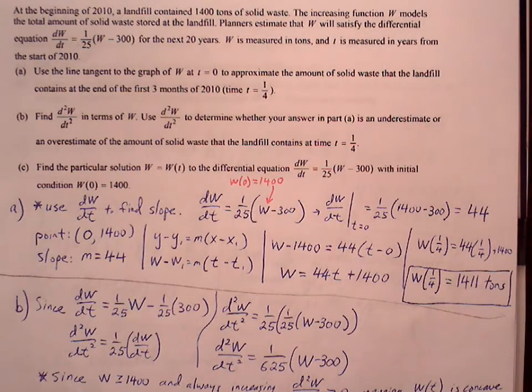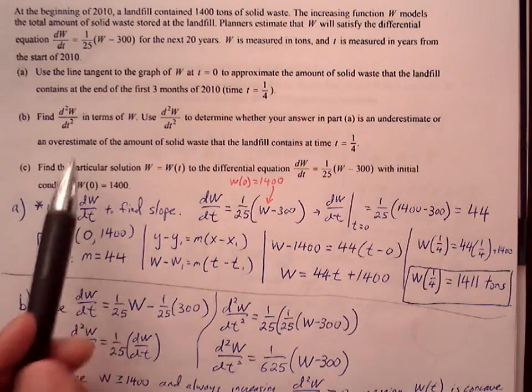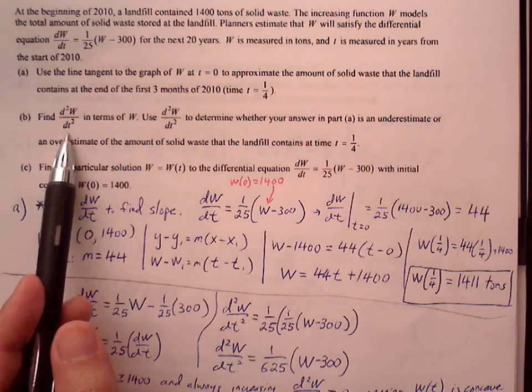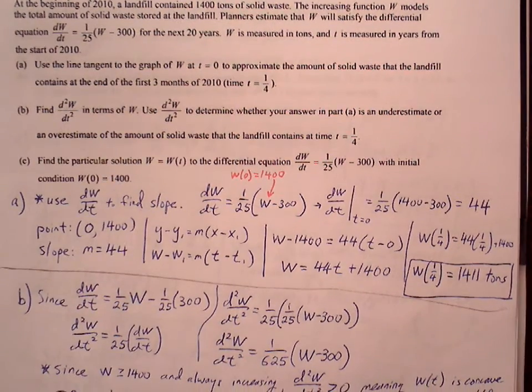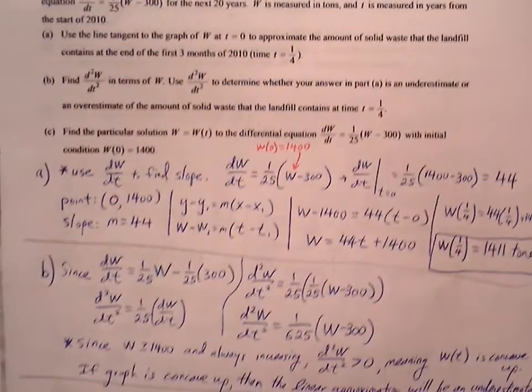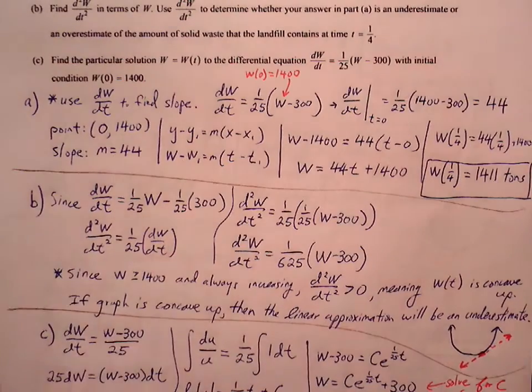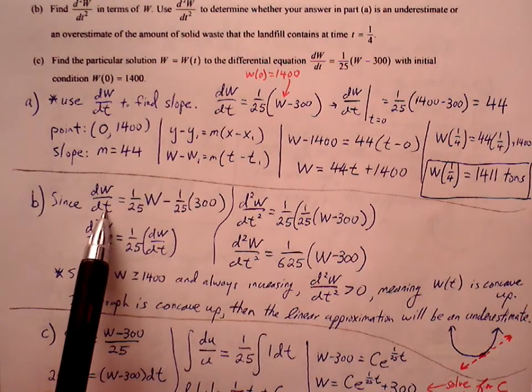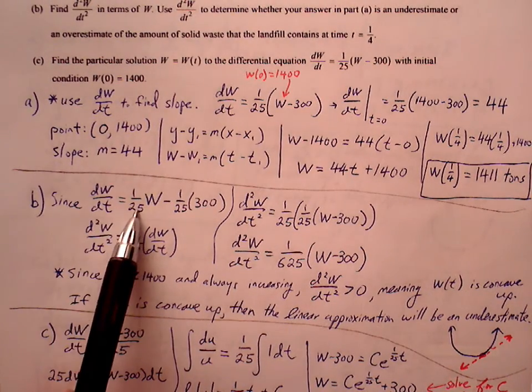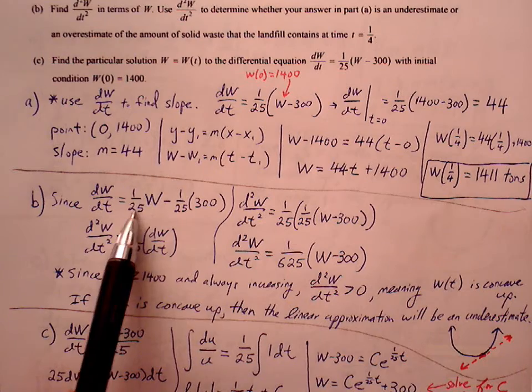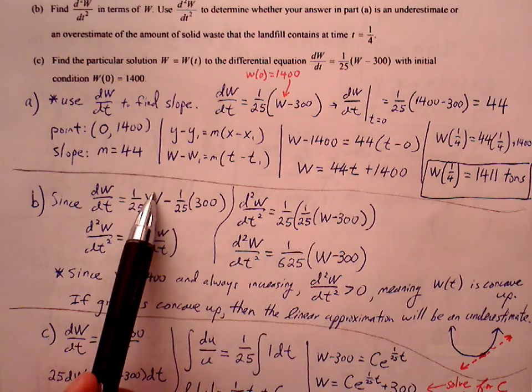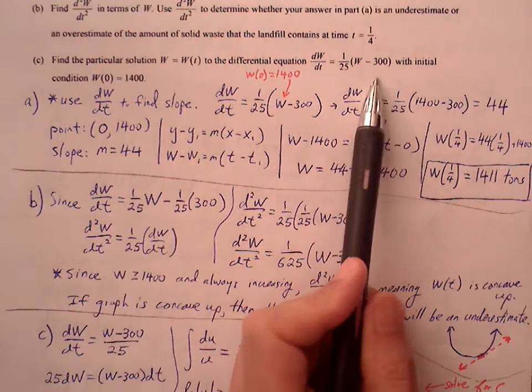For part B, find d²W/dt². So we're going to find the second derivative equation in terms of W. So to do that, we have to find our second derivative function. We have to start with the first derivative, which is dW/dt. I'm going to go ahead and just distribute the 1/25 through. So 1/25(W) minus 1/25 times 300.